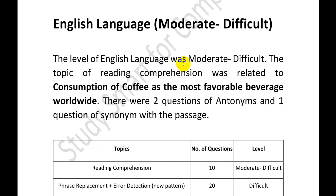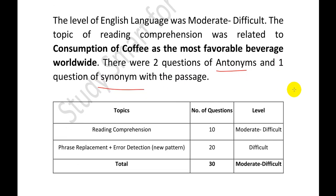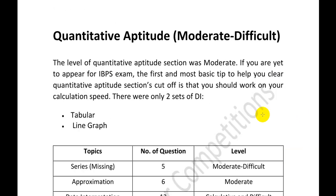Talking about the English language section, it was moderate to difficult. The reading comprehension topic was consumption of coffee as the most favorable beverage worldwide. There were two antonym questions and one synonym question from the passage, so vocabulary needs to be strong. Reading comprehension was 10 questions, and phrase replacement plus error detection followed new patterns including types like A plus B, and A-B-and-C formats, making it a bit difficult.